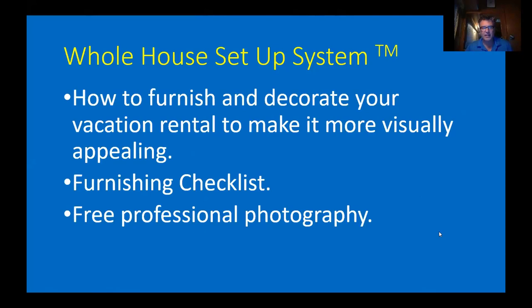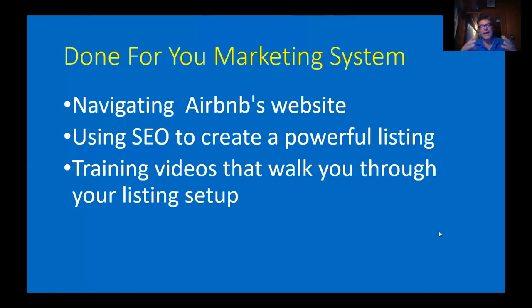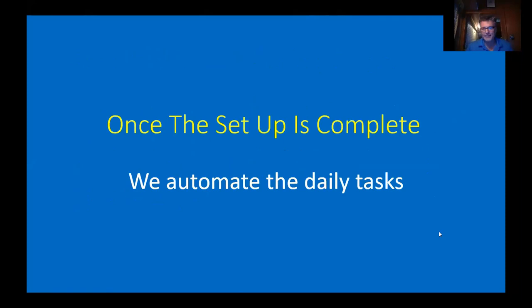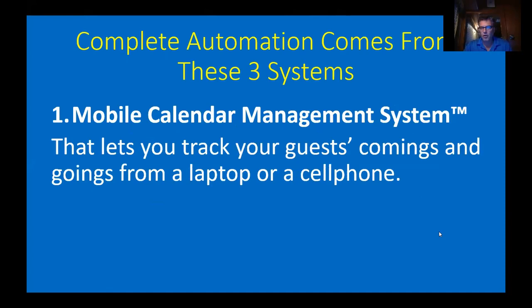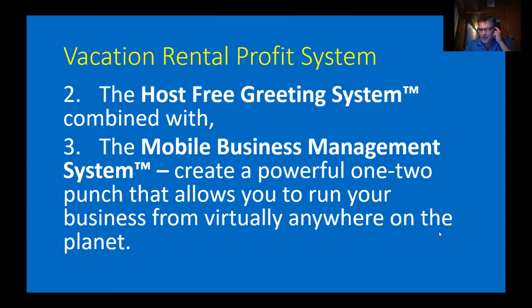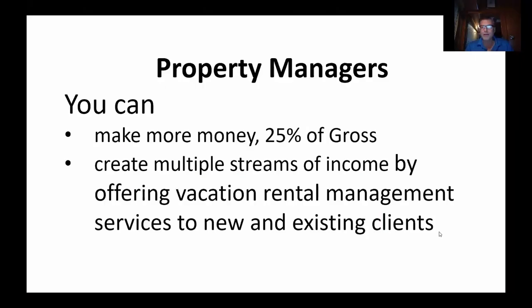The whole house setup system covers what to furnish, how to decorate it, your furnishing checklist, and how to get free professional photography. The done-for-you marketing system covers how to navigate Airbnb's website, how to use search engine optimization to create a more powerful listing, and all the training videos walk you through everything so you're not left guessing. Once you have the setup, you've got to automate: three phases to automation — mobile calendar management system, tracking your guests' comings and goings via laptop or cell phone — the host-free greeting system, so even if you don't have an on-site host, you can manage your whole business. You can do this virtually anywhere on the planet — Duncan lives in South Carolina but his business is all over the United States.